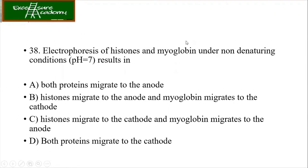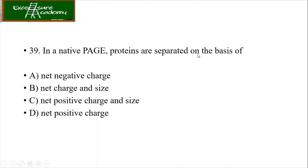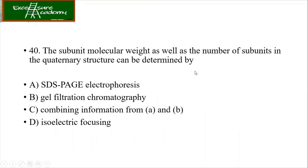Electrophoresis of histones and myoglobin under non-denaturing conditions — this question has been repeated. Histones will migrate to the cathode and myoglobin will migrate to the anode. In a native PAGE, proteins are separated on the basis of net charge and size. The subunit molecular weight as well as the number of subunits in the quaternary structure can be determined using both SDS-PAGE as well as gel filtration chromatography — option C is correct.